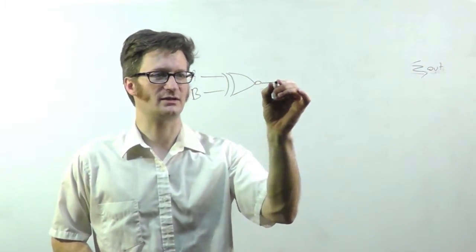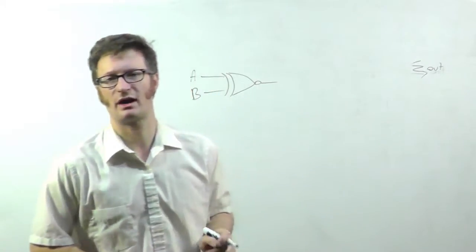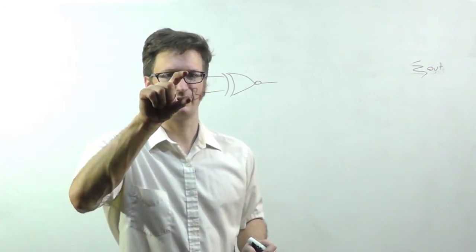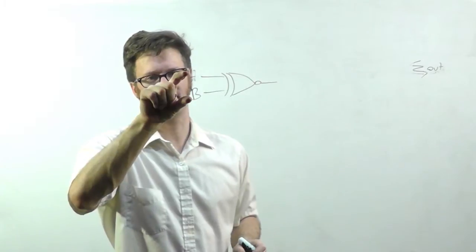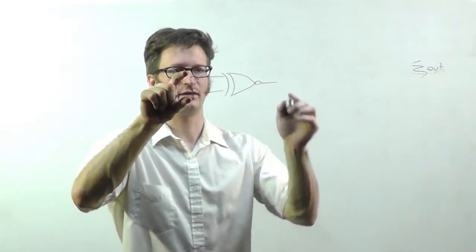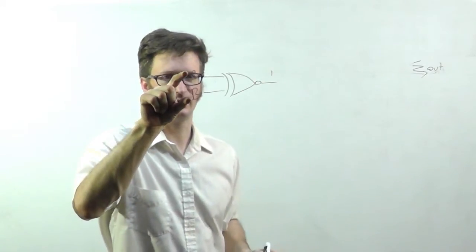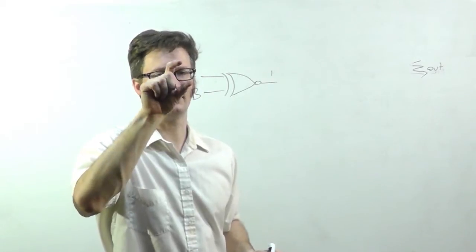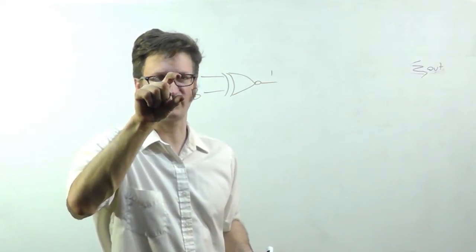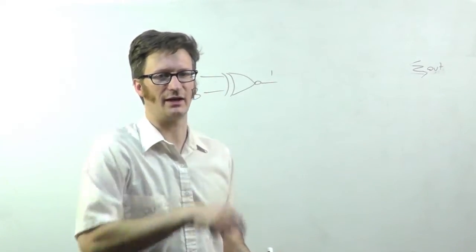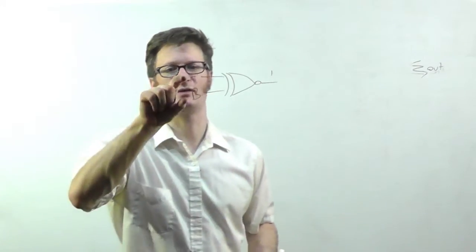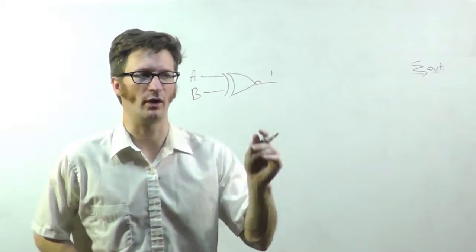Let's talk about the very first bits that come in. So if A is zero and B is zero, then this will output a one. If A is one and B is zero, or vice versa, this will output a zero. And if A is one and B is one, it'll output a one.